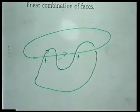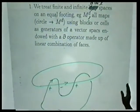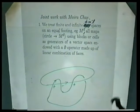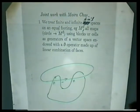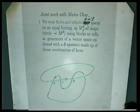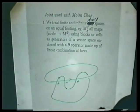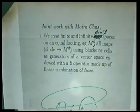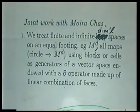Then all maps — say smooth or continuous — of the circle into the manifold. The way you treat these spaces, you break them into blocks or cells, which you take to be generators of a vector space; you can grade the vector space by the dimension of the cell. And there's a natural boundary operator on this space made up of linear combinations of the boundaries of the blocks. This has both a geometric and an algebraic flavor at the same time, so you can kind of move between the two domains.